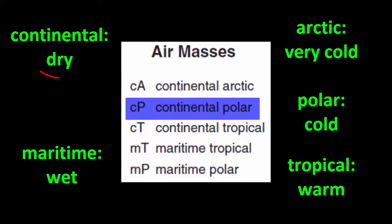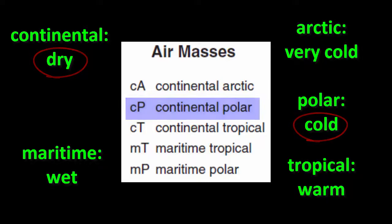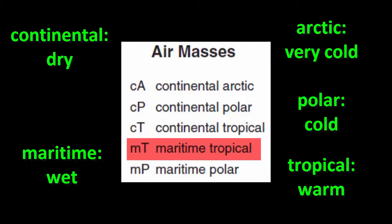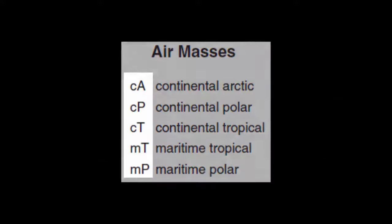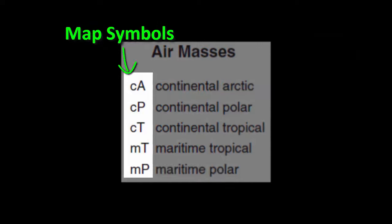For example, continental polar: continental means it's dry because it formed over land, polar means it's cold — so continental polar is cold and dry. Maritime tropical is just the opposite: maritime means it's forming over the ocean so it's wet, tropical means it's in a southern location so it's warm — a warm and wet air mass. You're simply combining those terms in different ways to find out what the air mass is like. The map symbols are the two-letter abbreviations for those terms — the first letter is always lowercase and the second is always uppercase, so they stand out on a map and won't be confused with state abbreviations.